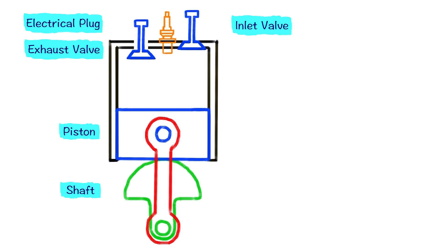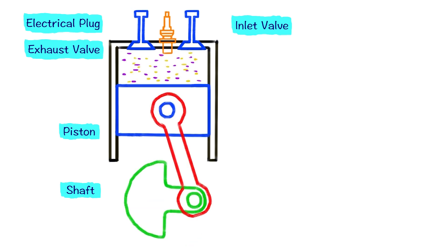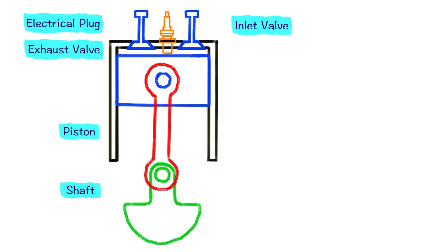The piston now under its own momentum will go up again and push the unwanted gases out of the exhaust valve. Then the piston will go down again and increase the volume of the chamber. At the same time we will close the exhaust valve, open the inlet valve, inject the air-gasoline mixture again, close the inlet valve. The piston will go up again increasing pressure and temperature. Now let's light the spark again and boom! The cycle goes on.